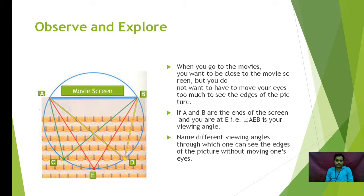Now students, you have to watch the image which is displayed on the screen. When we go to movies, we want to be close to the movie screen but we do not want to have to move our eyes too much to see the edges of the picture. Here we can see that A, B is the movie screen. A and B are the endpoints of the screen. Now imagine that you are at point E. Therefore, angle AEB is your viewing angle.